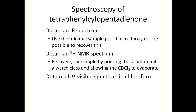Again, when you get the product and it is crystallized, you need to obtain an IR spectrum. In the case of the IR, you need to use the minimal sample possible since it may not be possible to recover it. For the proton NMR, you need to use chloroform as a solvent and recover your sample by pouring the solution onto a watch glass and allowing the chloroform to evaporate. In this case, we are going to obtain a UV-visible spectrum in chloroform.